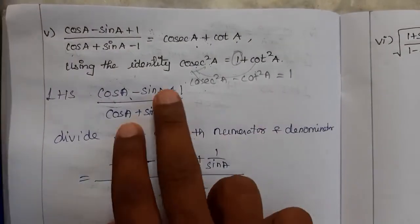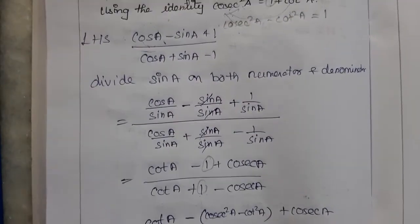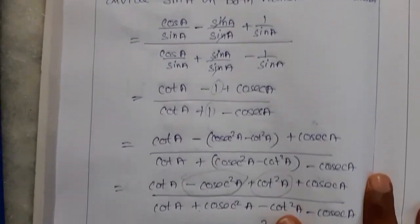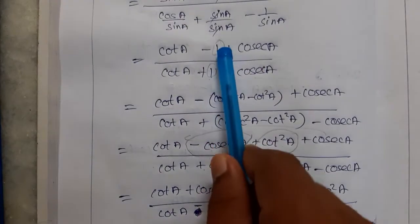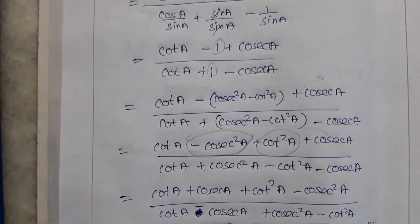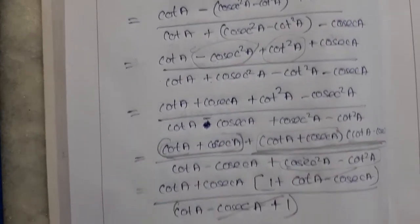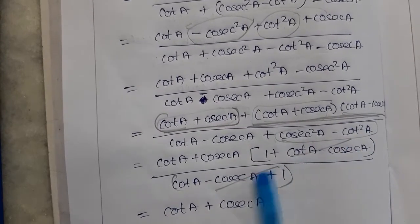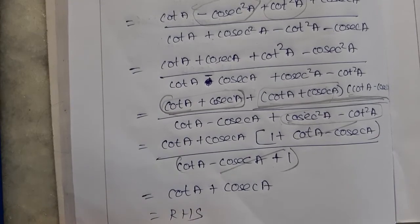Since the question used cosec A and cot A, we divided by sin A to get everything in terms of cot and cosec. Then we substituted the identity cosec squared A minus cot squared A for 1, and after simplifying, the numerator and denominator cancelled to give cot A plus cosec A, which equals RHS. Hence proved.